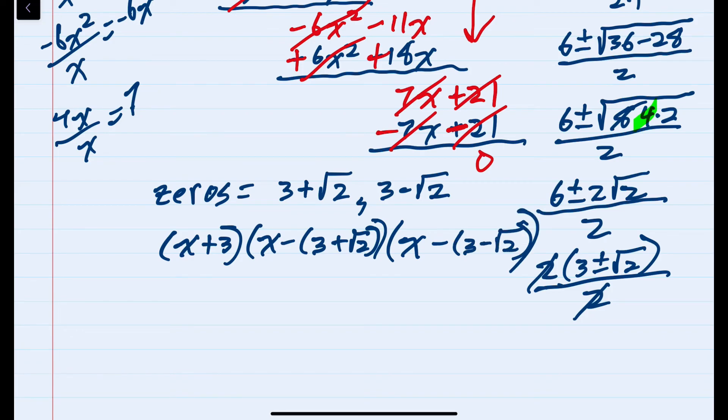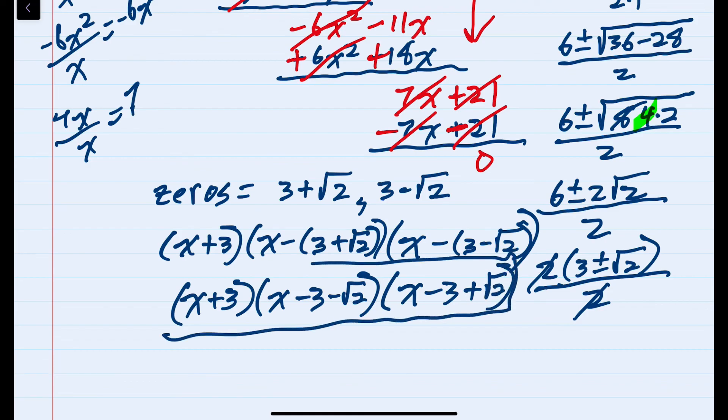I would take one more step here just to simplify those. Distributing that negative, this is x minus 3 minus the square root of 2, and x minus 3 plus the square root of 2. These are three linear factors from the original g(x).